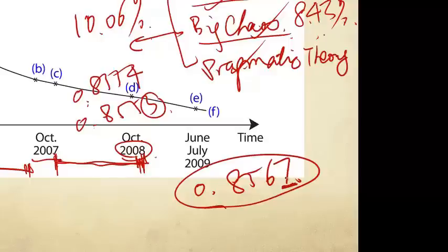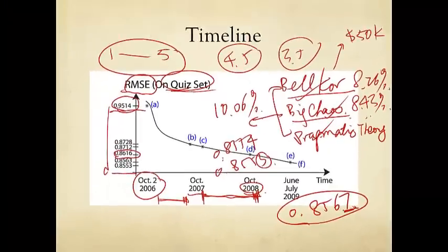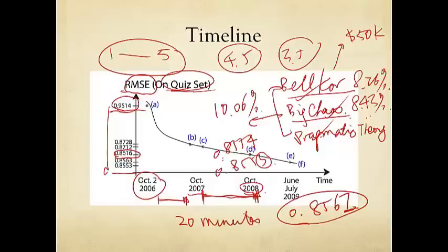Both teams received RMSE of 0.8567 on the test set — the same performance to four digits, which is the last digit that counts. So who would win? It was determined by who submitted first. BellKor's Pragmatic Chaos had submitted their algorithm 20 minutes before the Ensemble. Because they both achieved the same performance by RMSE on the test set, it came down to submission time, and BellKor's Pragmatic Chaos won the competition by a differential of 20 minutes in this nearly three-year scientific quest.